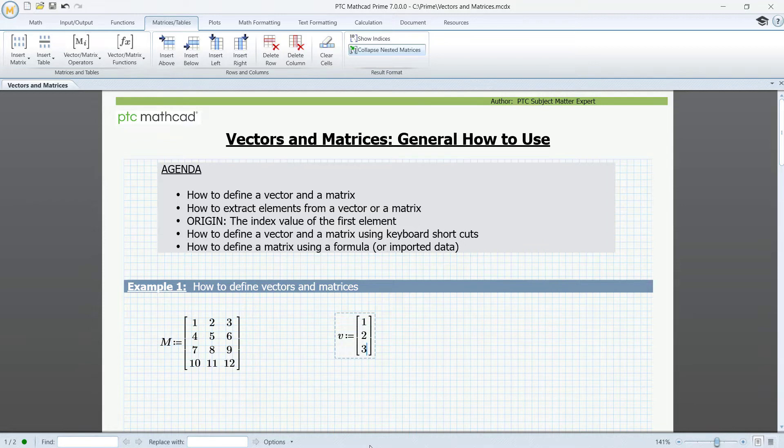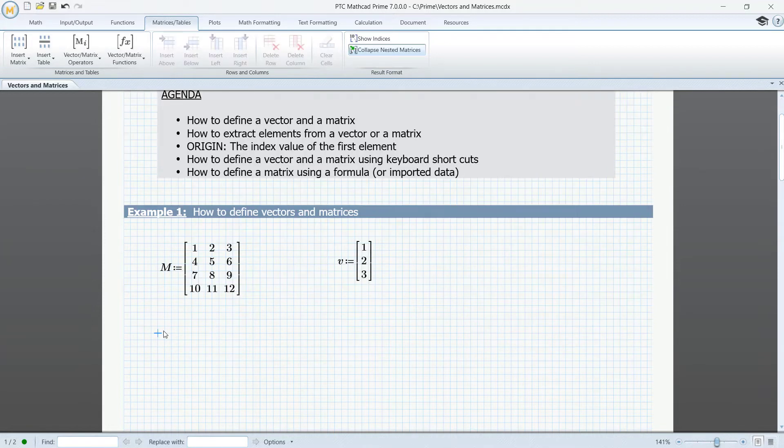To extract elements from a matrix, type M and go to Vector Matrix Operators and select Index. 1, 1 for row 1, column 1. Here you might have expected that the top left element was returned. By default, the matrix and vector index origin is set to 0.